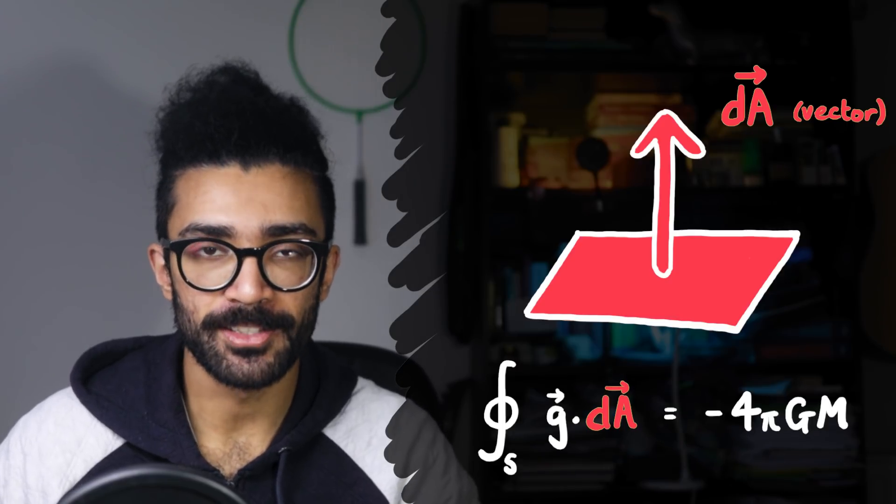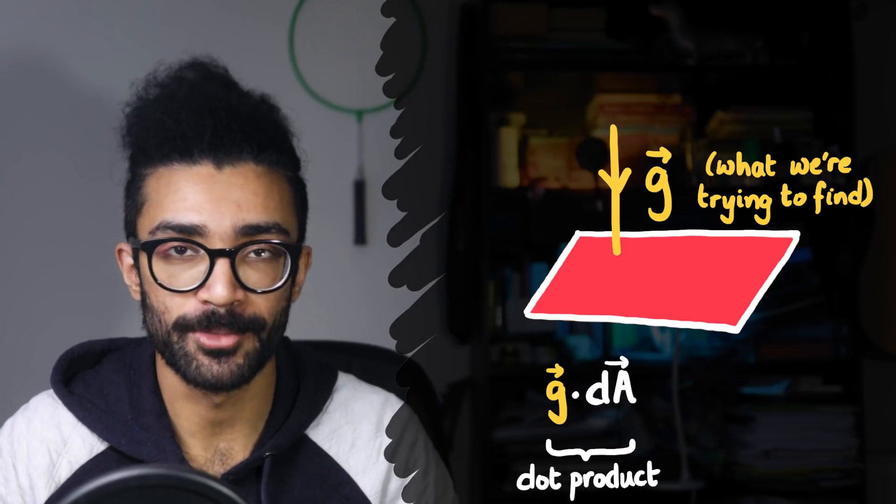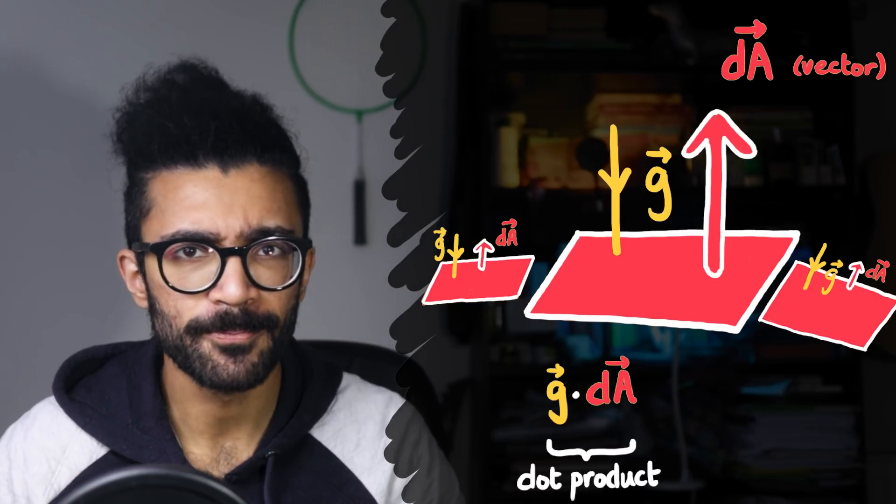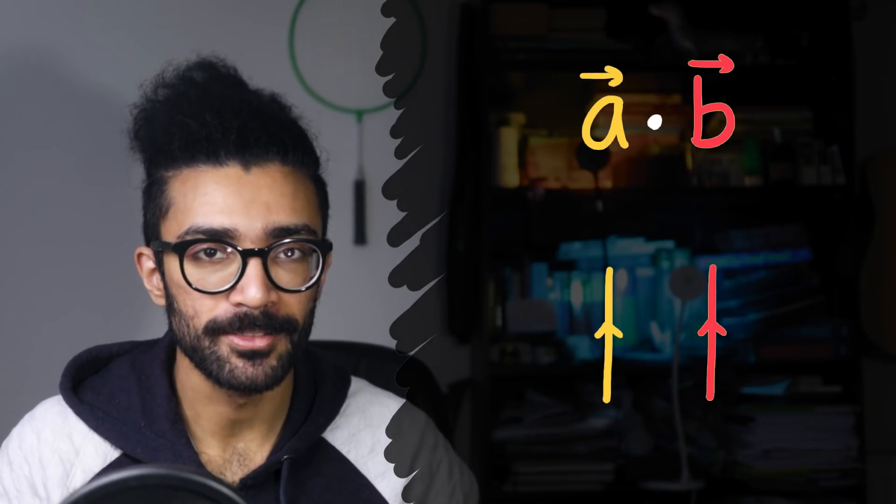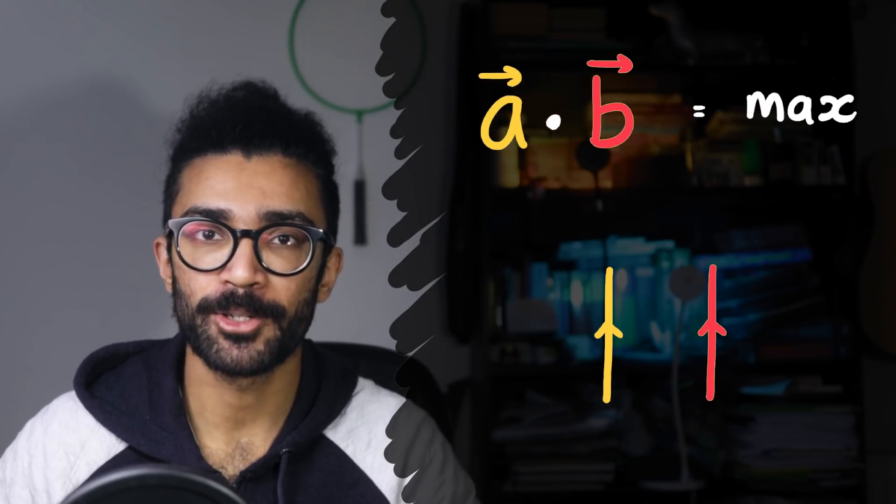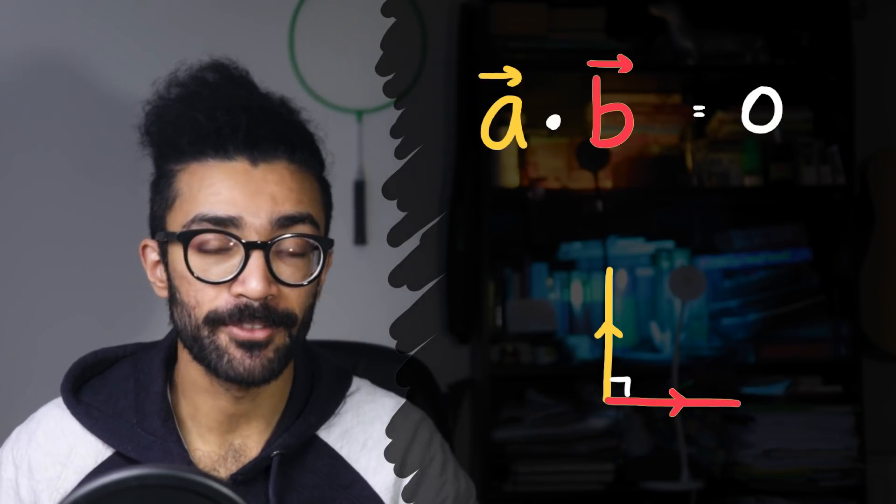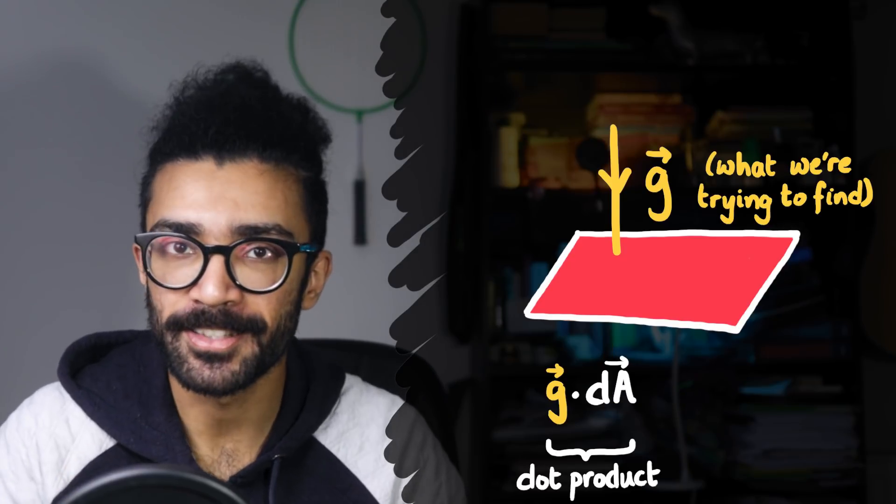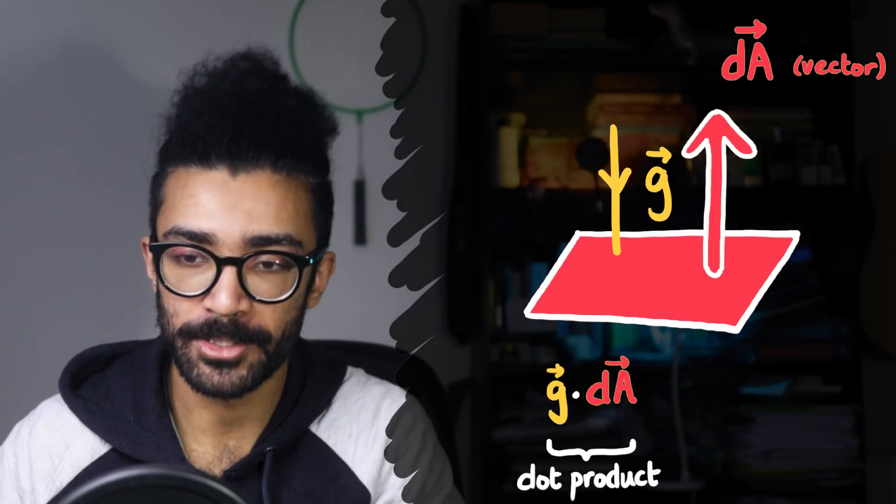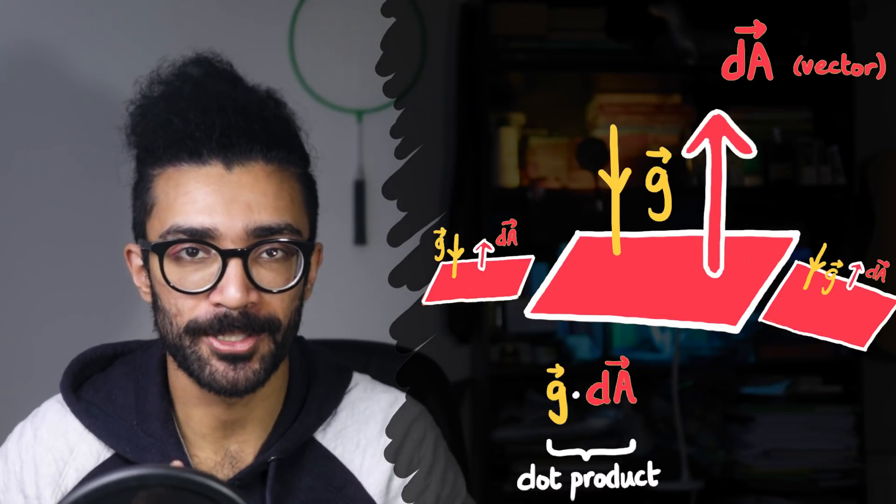Next, we see that Gauss's law tells us that we want to find the dot product between the gravitational field at every single point in space, which is exactly what we're trying to find here, and the little area vectors dA. The dot product, by the way, is a measure of how well two vectors align with each other. So if they're both pointing in the same direction, then the value of the dot product is as large as it can be, and if they're both exactly perpendicular to each other, then the value is zero. And in this case, then, we're simply measuring how well the gravitational field line aligns with our little area vector, or another way to think about it is how much of our gravitational field lines pass through those little area elements.